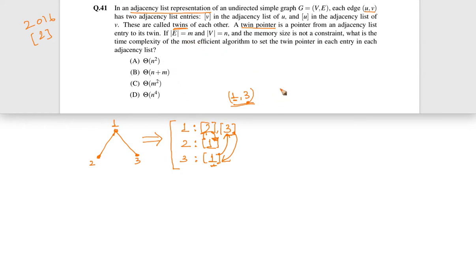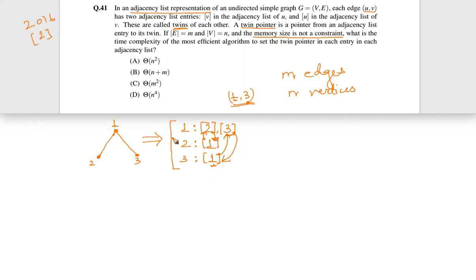Total number of edges is m and total number of vertices is n. Memory size is not a constraint. We have to find the time complexity of the most efficient algorithm to set all twin pointers in each entry of the adjacency list — initially these pointers are not set.